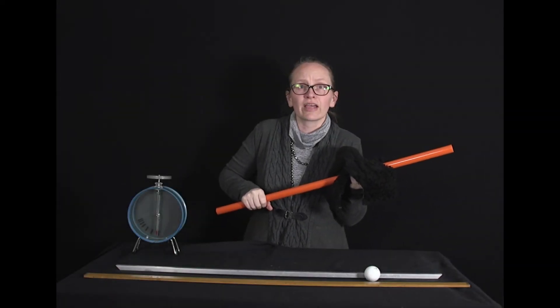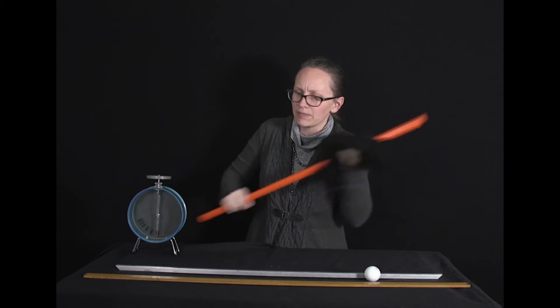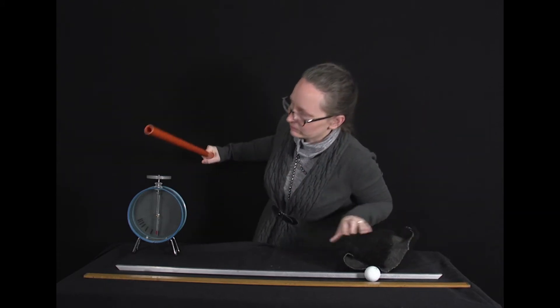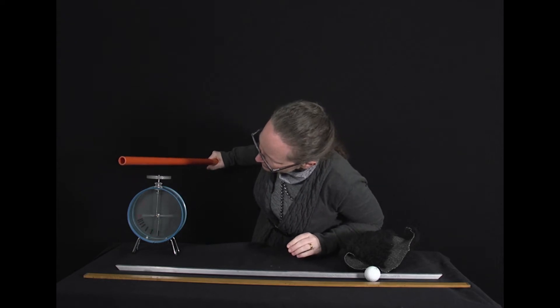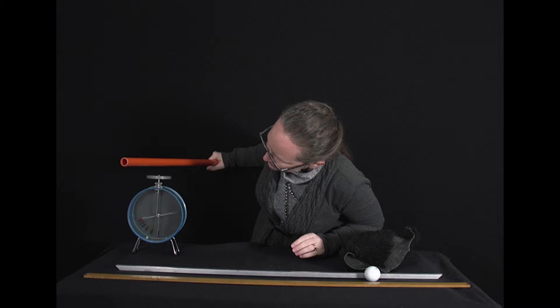Let's have a look at what happens when I bring my charged PVC pipe close to the top of the electroscope. So you can see when it becomes close, the needle deflects like that.